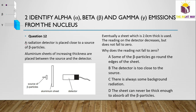Question 12: A beta particle source is used with aluminum sheets of increasing thickness placed between source and detector. A 2 cm thick sheet is used and the reading decreases but does not fall to zero. Why does it not fall to zero? Some beta particles go around the edges — no, they travel in a straight line. The detector is too close — no, the sheet is between them. The correct answer is: there is always some background radiation detected.